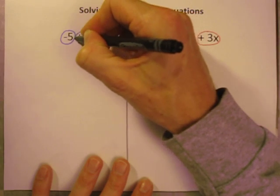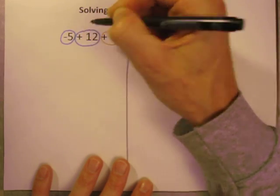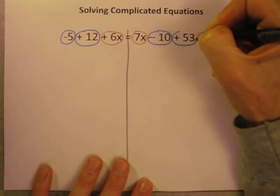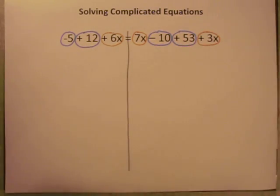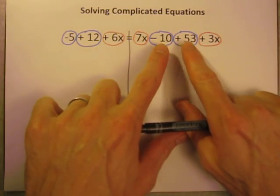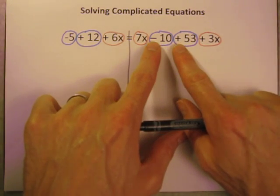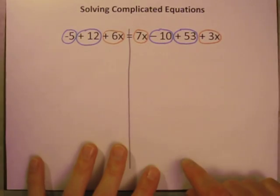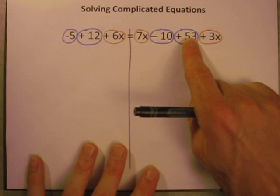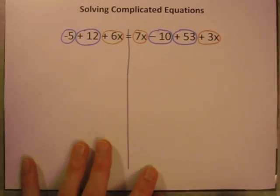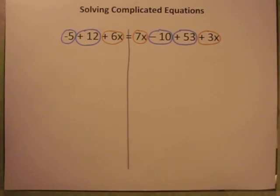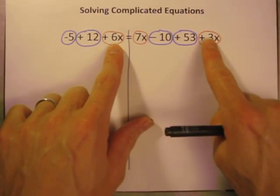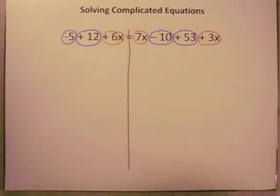The plain old numbers are all like terms. There is a negative 5, there is a positive 12, a negative 10 on the right side, and a positive 53 on the right side. Notice I'm circling these including the number with the sign ahead of it. Don't just call that a 10, it is a negative 10, that negative sign has to go with it. A positive 53, a positive 3x. So make sure you're including the sign ahead of it. And I like to color code them too, so it's easy to see my x's are in pink, my irregular numbers are in green.